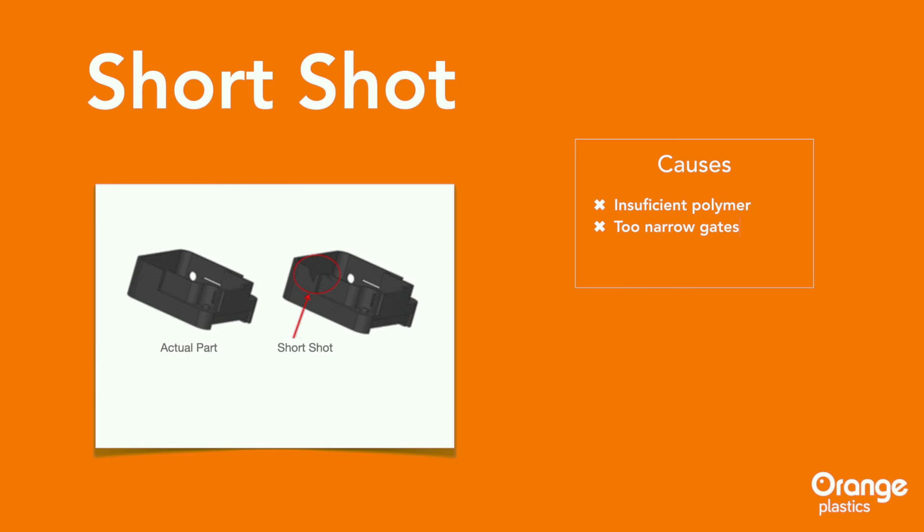Alternatively, the mold design could contain gates that are too narrow. Also, the material could be too viscous, or the mold could be too cold to allow the molten material to completely fill the mold before cooling.